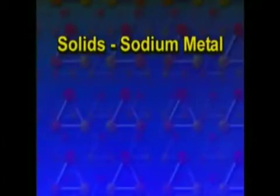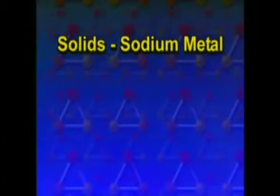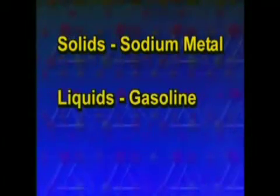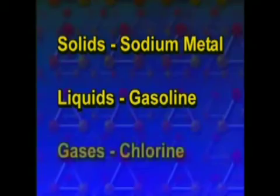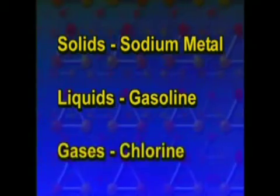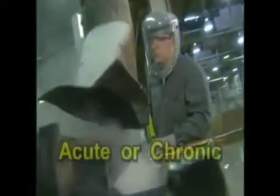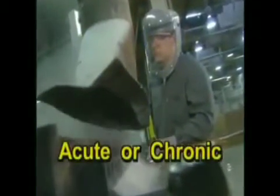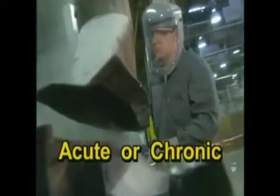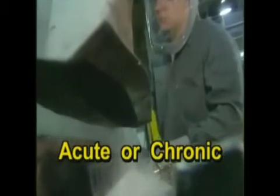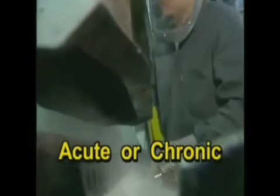Hazardous chemicals can be solids such as sodium metal, liquids like gasoline, or gases like chlorine. The effect a chemical has on your body can be either acute or chronic depending on the type, frequency, and length of your exposure.